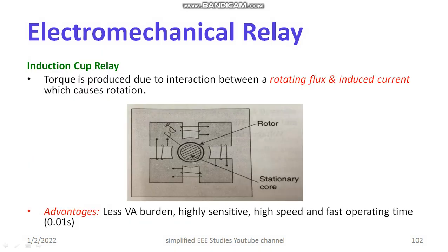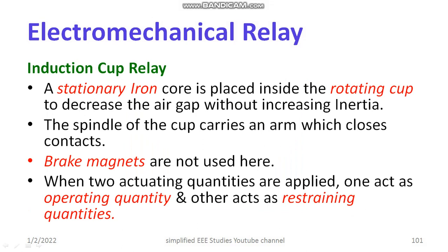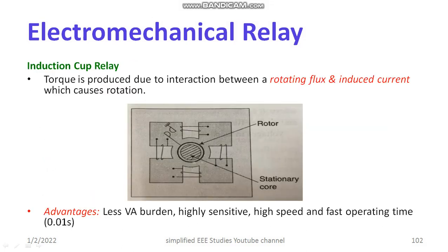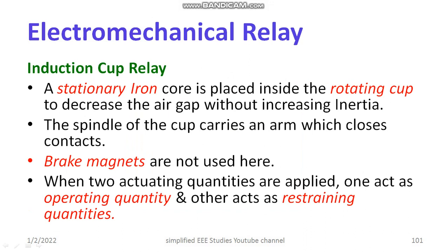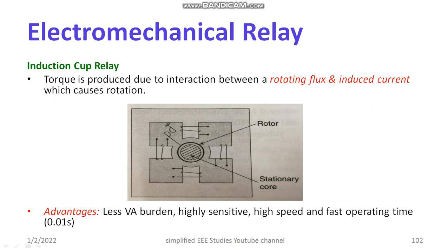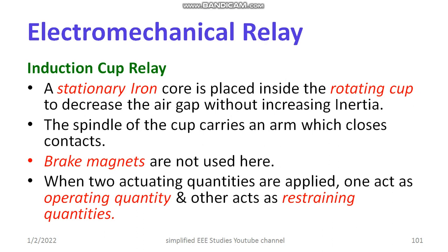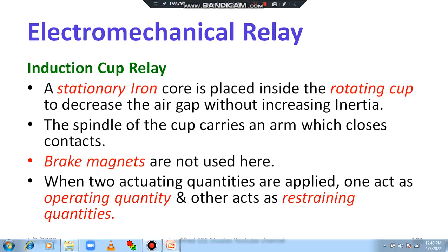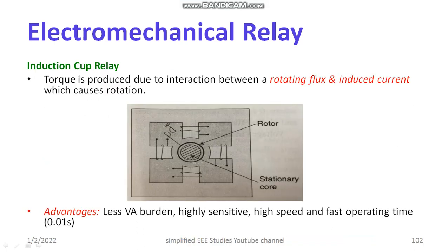This is your stationary core, and you can see the rotor part. There are no brake magnets enclosed here. When two actuating quantities are applied, one acts as the operating quantity and another acts as the restraining quantity. The torque is produced due to interaction between the rotating flux and the induced current, which causes rotation. The advantages of induction cup relay are less VA burden, high sensitivity, and high speed of operation compared to other types of induction relay.